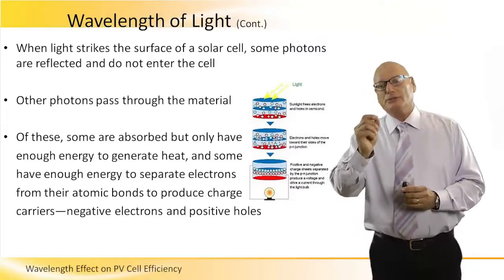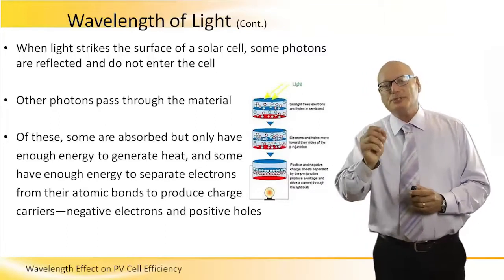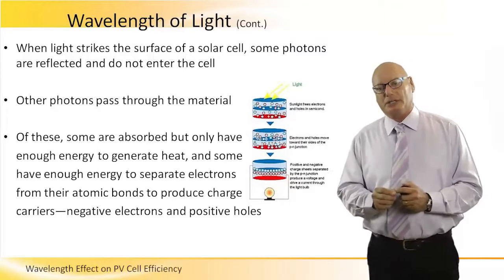When light strikes the surface of the solar cell, some photons are reflected and do not enter the cell.